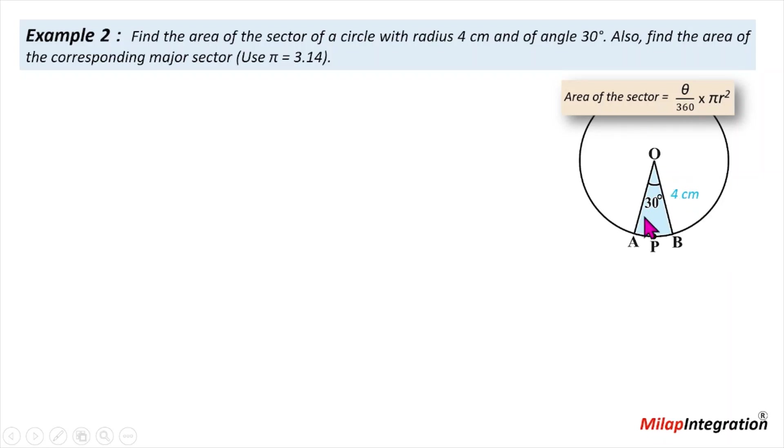So if you know the major sector, you know the area of the circle, so you can subtract the minor sector. Or, what do you think, this sector is 30 degrees, so how much remaining angle is 360 minus 30. That means 330 degrees. So there are two ways you can calculate.